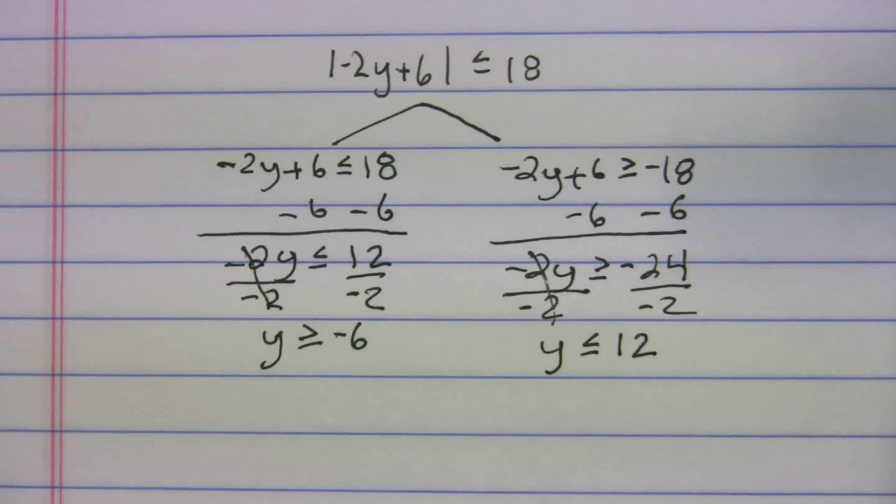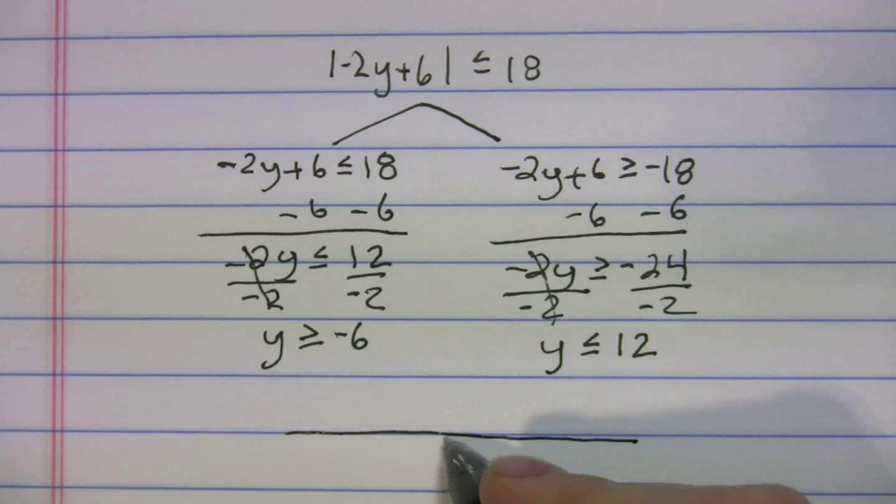Okay. So now what we're going to do is if you can't visualize it again, draw a number line. And let's see where this solution set is. If that's 0, we'll put -6 in. This will be 12.